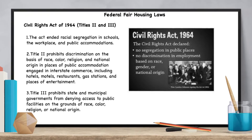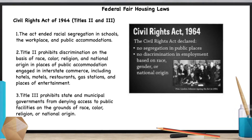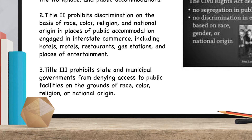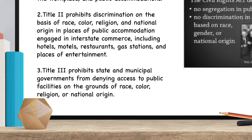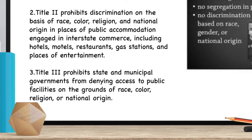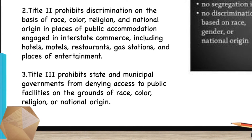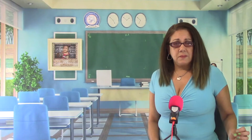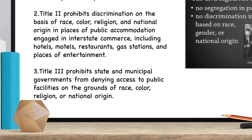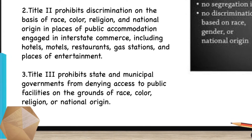The Civil Rights Act of 1964 was landmark legislation that ended racial segregation in schools, workplaces, and public accommodations. Title II prohibits discrimination on the basis of race, color, religion, and national origin in places of public accommodation engaged in interstate commerce, including hotels, motels, restaurants, gas stations, and places of entertainment. Title III prohibits state and municipal governments from denying access to public facilities on those same grounds.